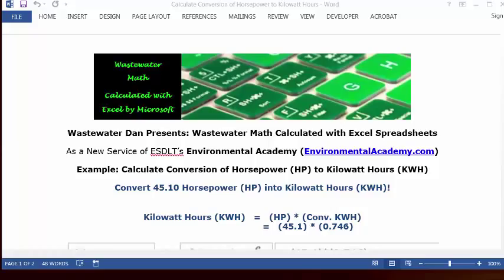So we will take the horsepower, 45.1, and multiply it by 0.746, and that's going to give us our kilowatt-hours.